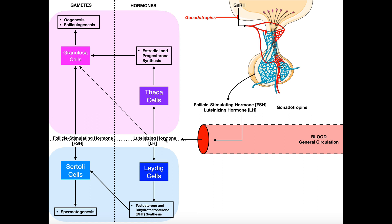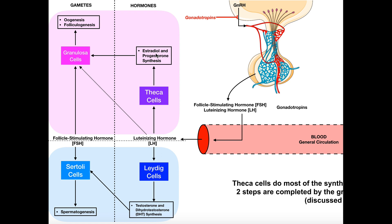Beginning with luteinizing hormone in females: LH acts directly on theca cells, allowing them to make two major hormones. One is estradiol, the major estrogen — note that estrogen is not a single molecule but a class of molecules including estradiol, estrone, and estriol. The other is progesterone, the most important progestogen. So theca cells begin making these hormones due to the action of luteinizing hormone.